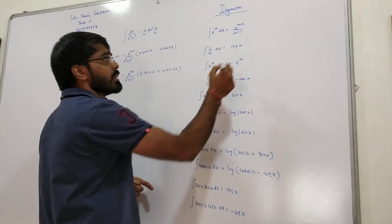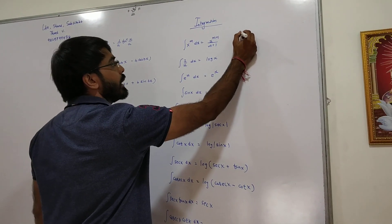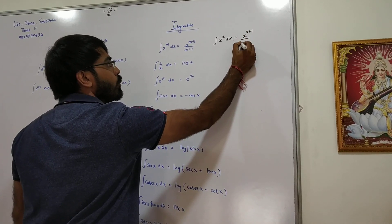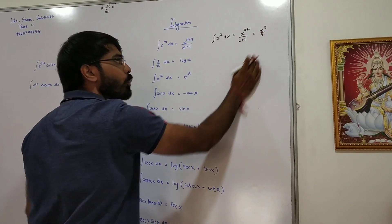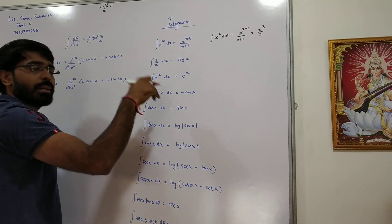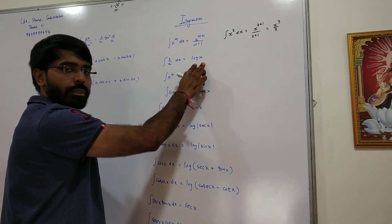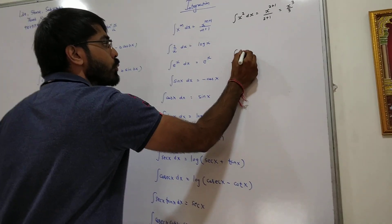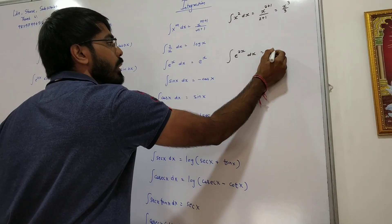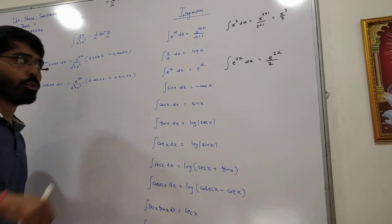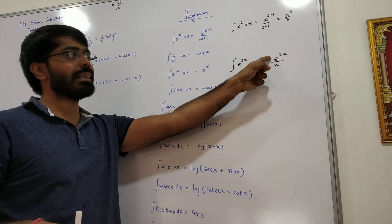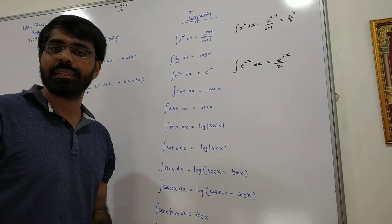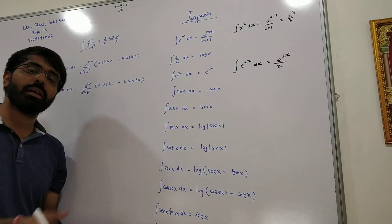x raised to m — the formula for x raised to m. Then 1 upon x, 1 upon x, e raised to x, e raised to 2x, e raised to 2x upon 2. Integration and differentiation.